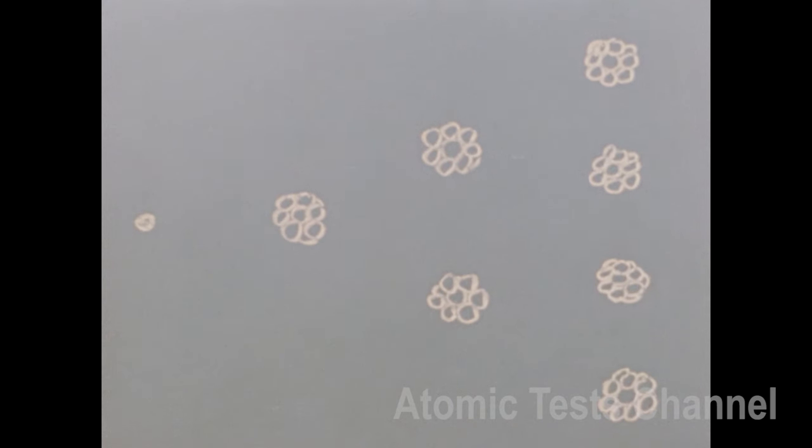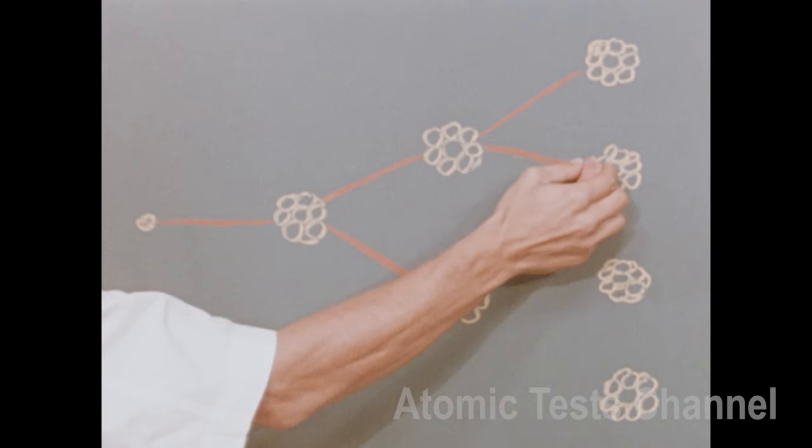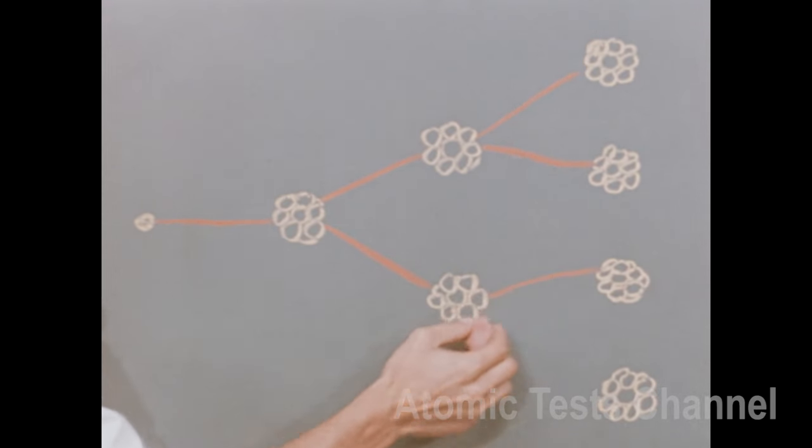As we saw earlier, when a neutron strikes the nucleus of a target atom, the atom fissions, and a chain reaction takes place as other neutrons strike still other atoms. This reaction occurs only in certain heavy, unstable atoms.